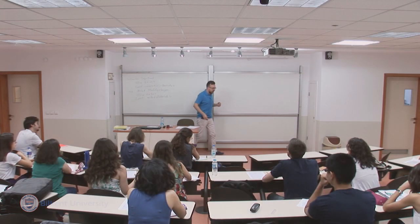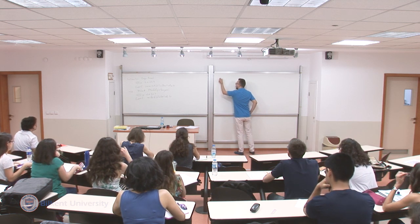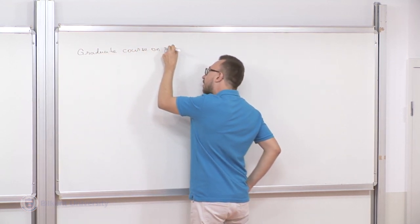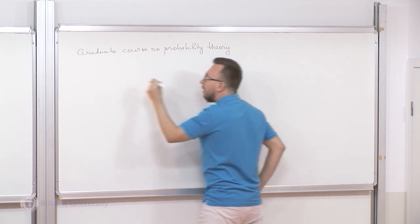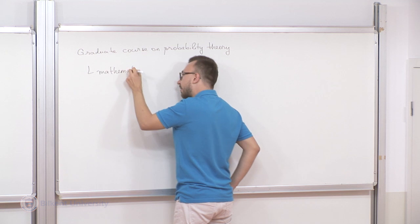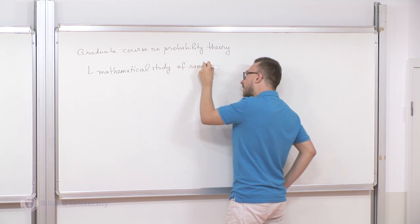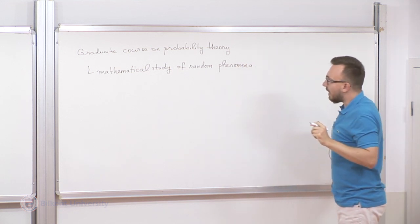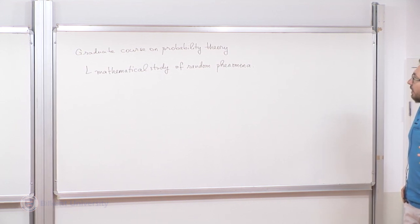Probability theory is the mathematical study of random phenomena. Anything that has some randomness or uncertainty in it has something to do with probability.